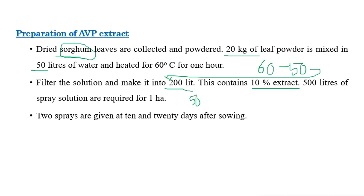Approximately 500 liters of spray solution are required per hectare, so we can prepare the leaf extract according to our land requirements. Two sprays are given — the first at 10 days after sowing and the second at 20 days after sowing. The solution is prepared by mixing 20 kg of leaf powder with 50 liters of water, heated at 60 degrees centigrade for one hour, and made up to 200 liters containing 10 percent extract.